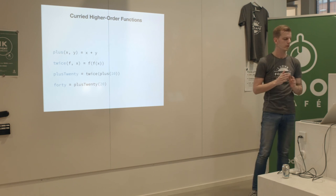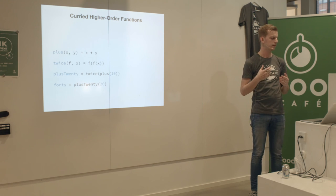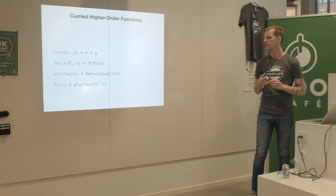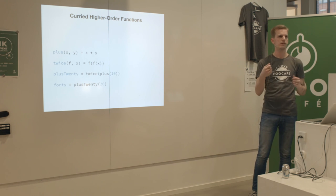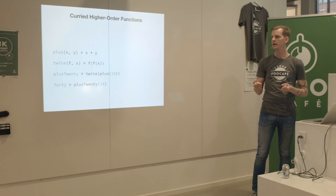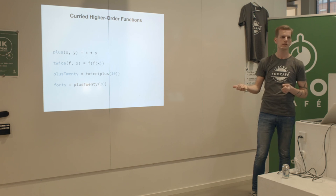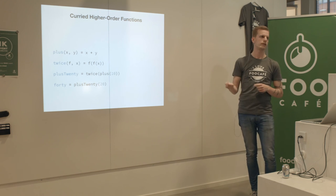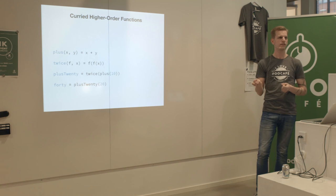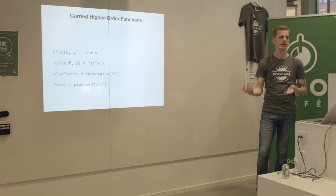You can do curried higher-order functions - combining higher-order functions with currying to do composition of generic functions. We define the plus function, then a twice function that takes another function and a value, applies that function on the value and on itself again. We say 'plus20' is the result of applying 'twice' to 'plus applied to 10.' If you do plus-10 twice, you get plus-20. Applying plus20 to 20 gives 40.